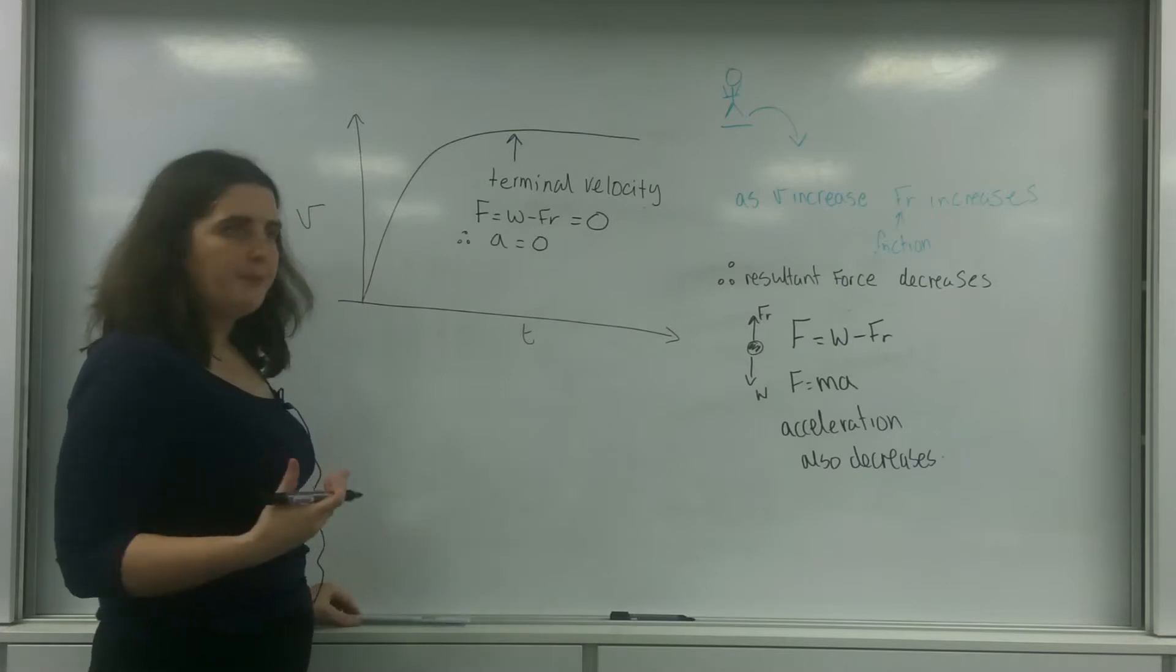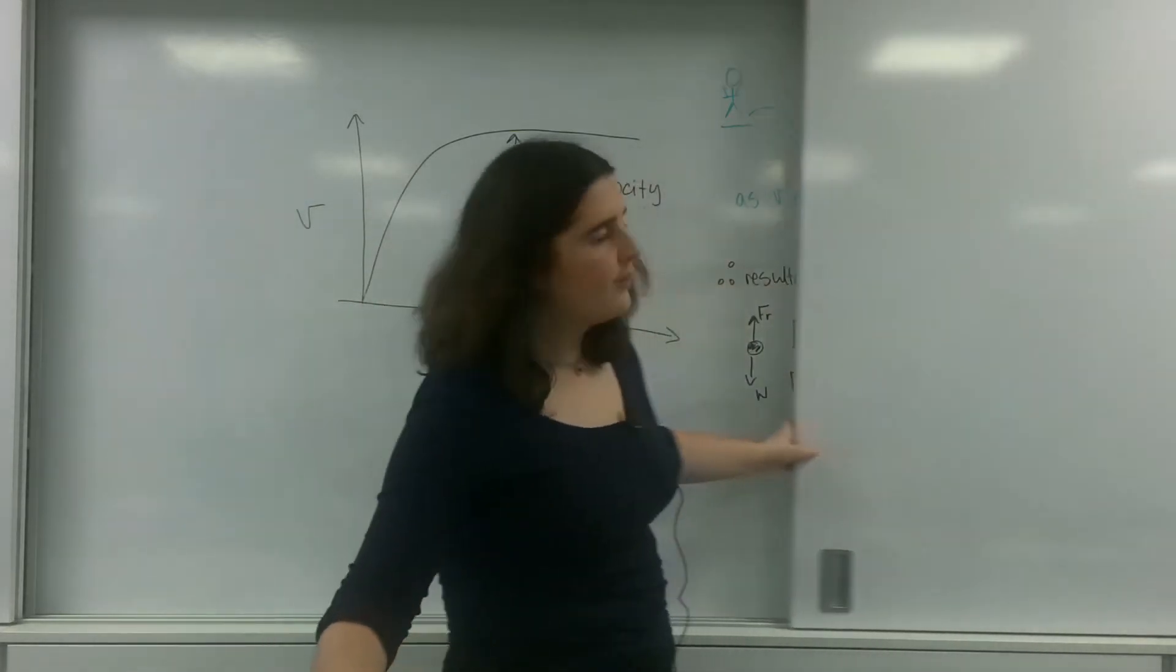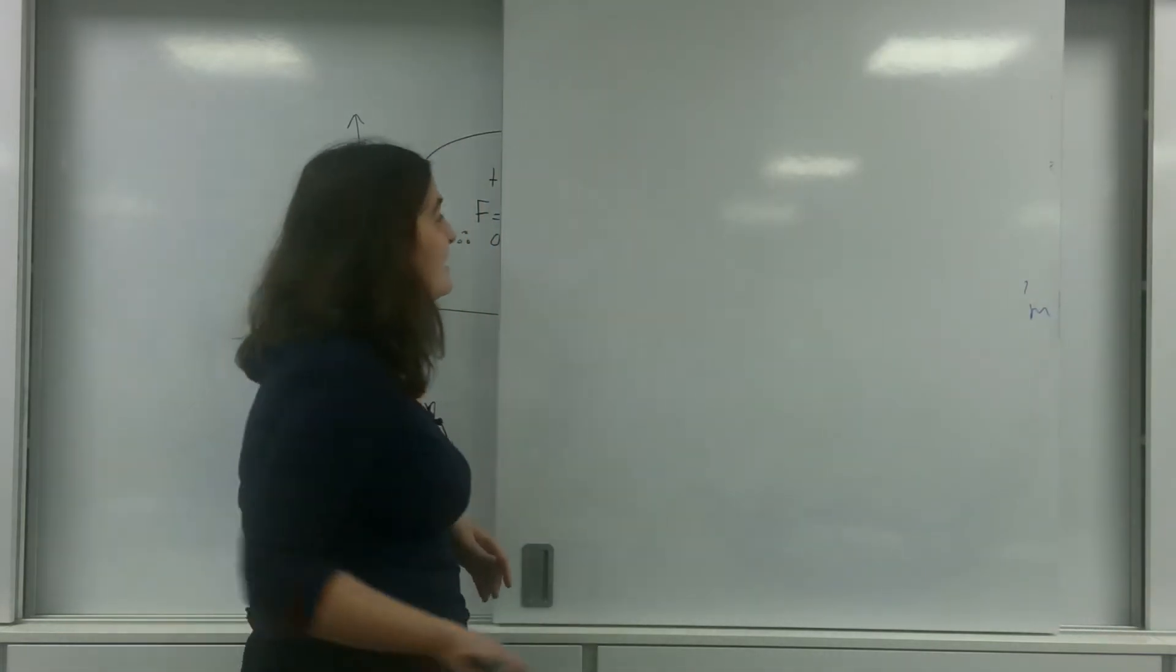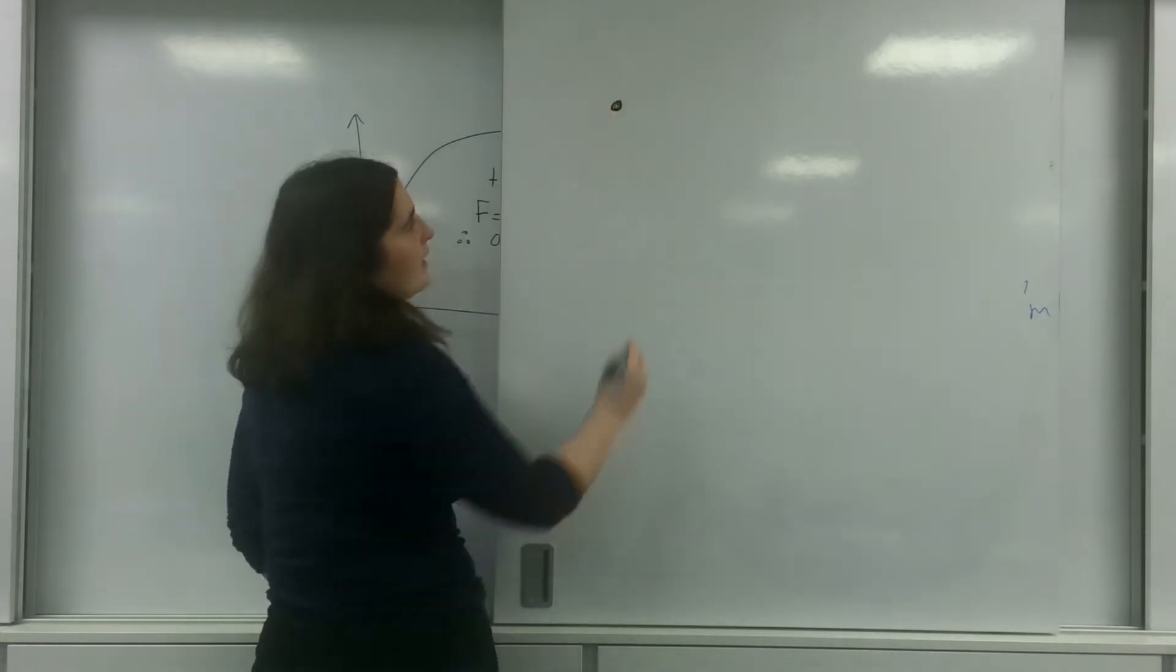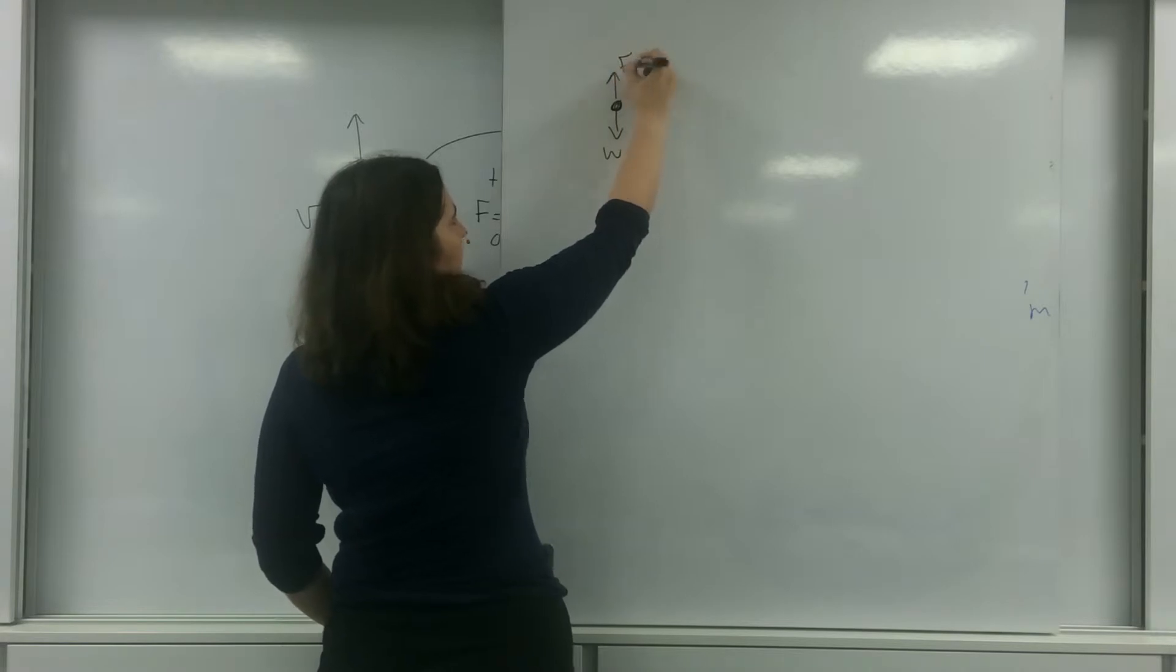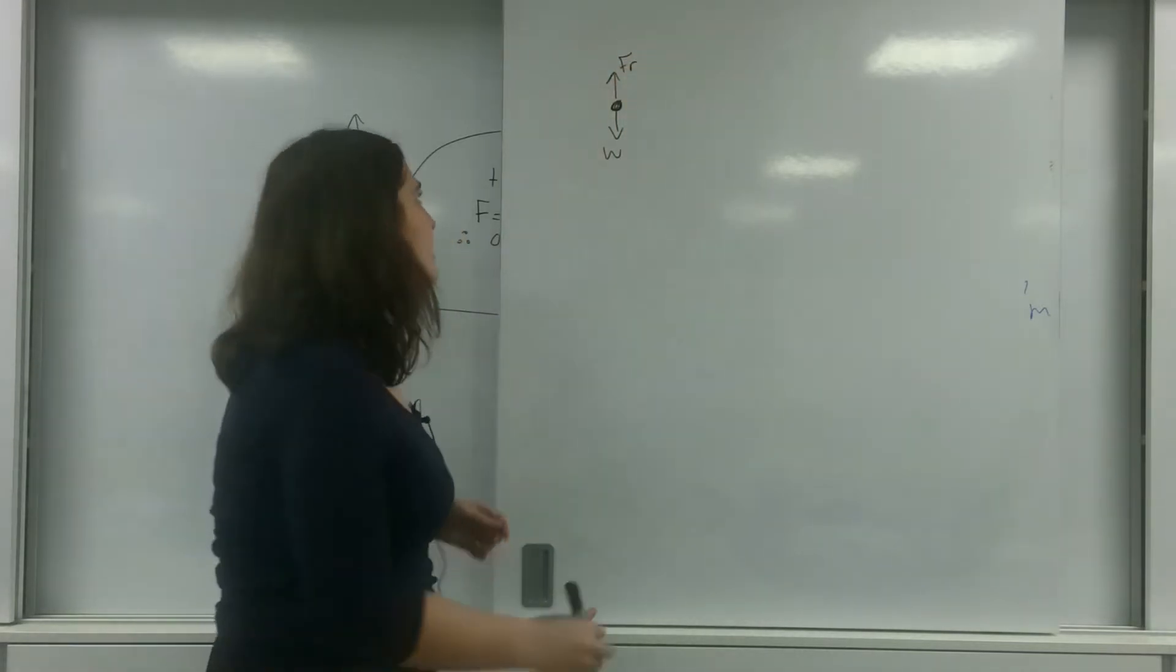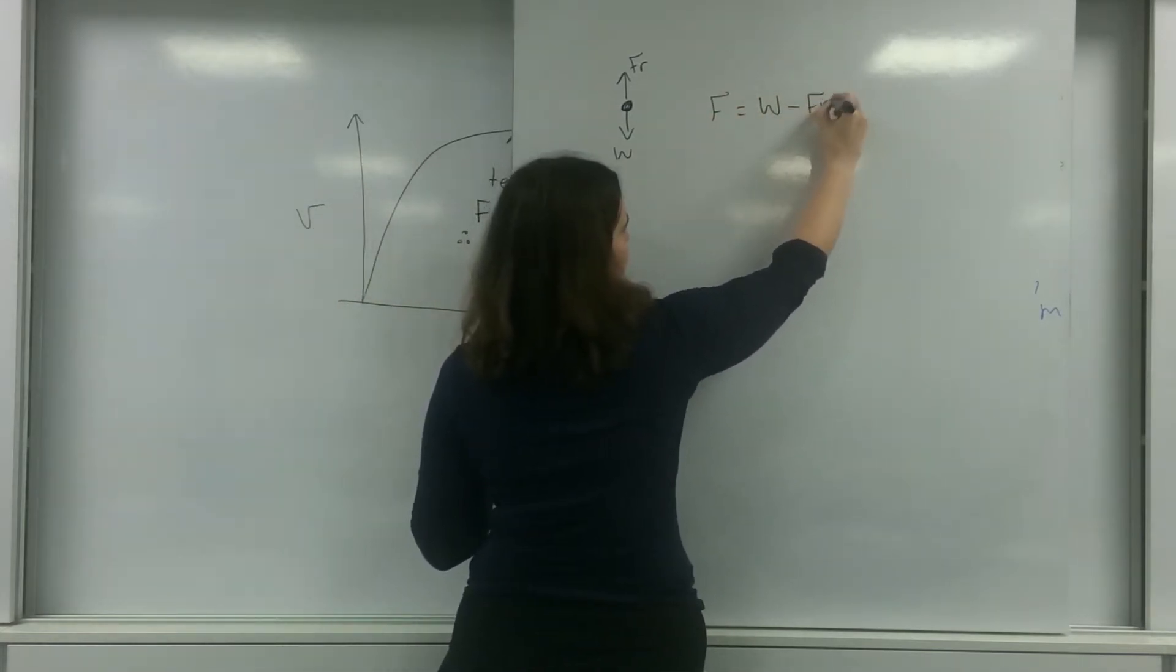Now, what happens? The reason a parachuter, when he's jumping off, base jumping off the plane, when he's initially falling up here, he has the weight and the friction here, the drag, the air drag. And the resultant force is the weight minus the friction.